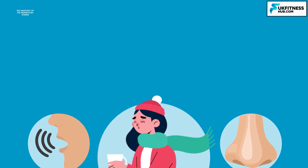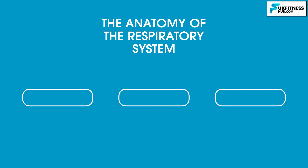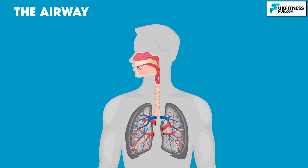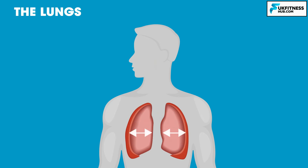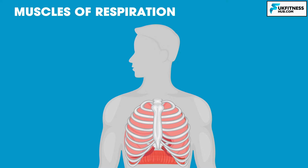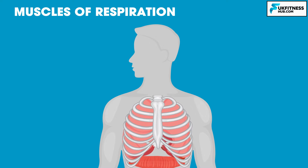Let's now move on to the anatomy of the respiratory system. There are three major parts. The airway, which includes the nose, mouth, pharynx, larynx, trachea, bronchi, and bronchioles, carries air between the lungs and the body's exterior. The lungs act as functional units by passing oxygen into the body and carbon dioxide out. Finally, the muscles of respiration, including the diaphragm and intercostal muscles, act as a pump by pushing air in and out of the lungs during breathing.